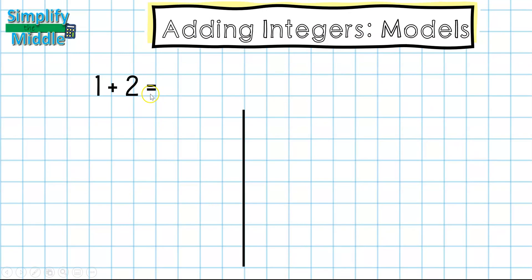Now we're going to start out with a very basic problem one plus two. We all know the answer is three but the point here is to learn how to use the models in order to add up numbers that are not all positive. So my first step when I'm using counters is to first show the first number so I have one here so I have one yellow. Then I'm going to add whatever the second number is. So because it's a positive two I added two yellows.